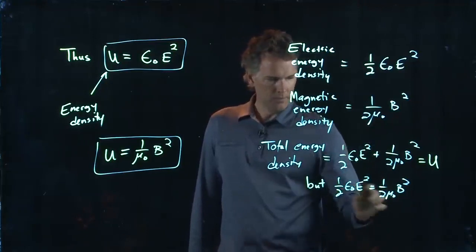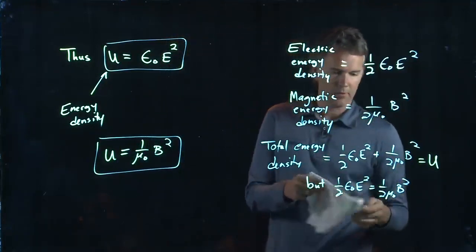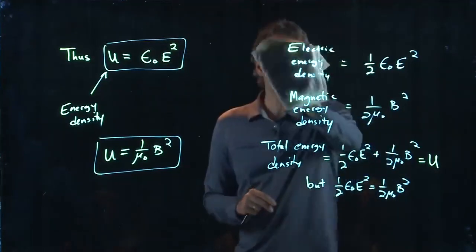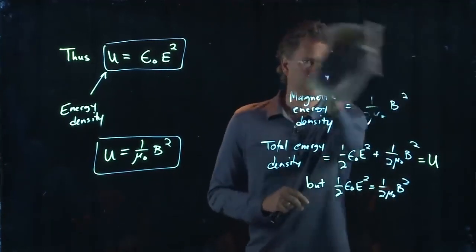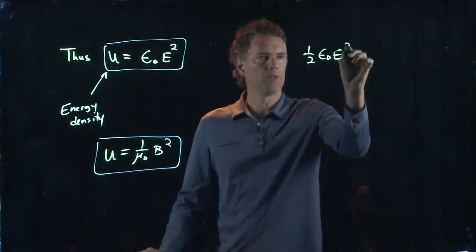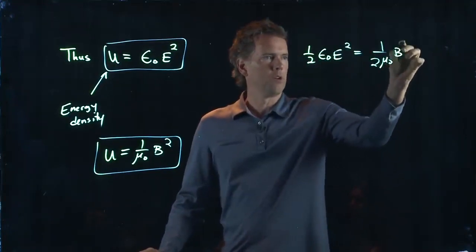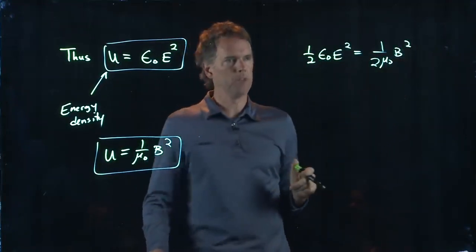But let's take a look at this last equation here and see if we can determine the relationship between E and B. So what we said was one half epsilon knot E squared is the same as one over two mu knot B squared.